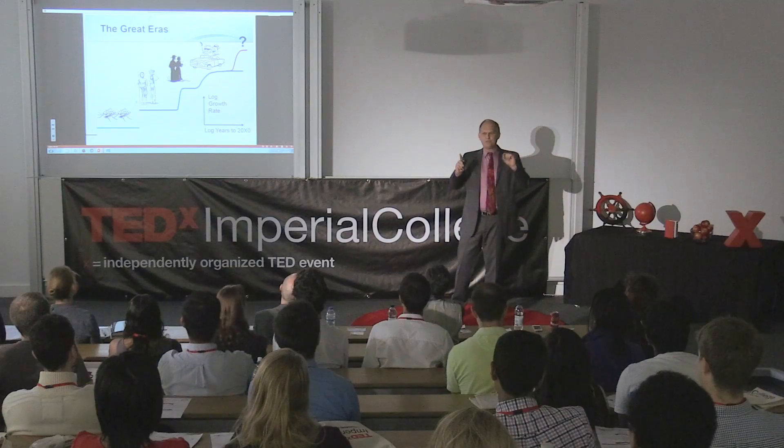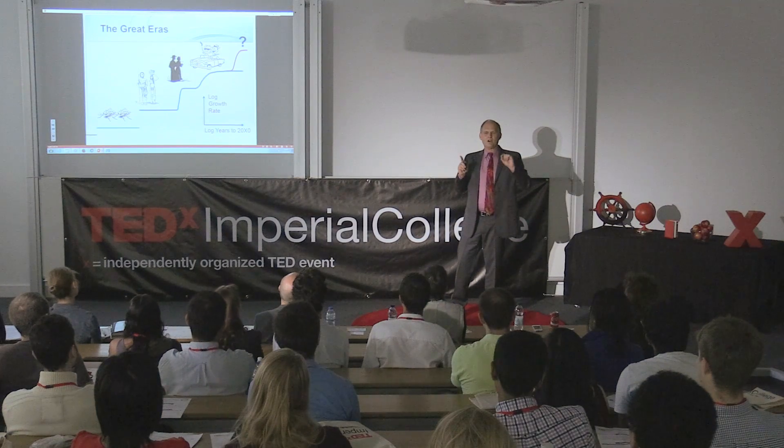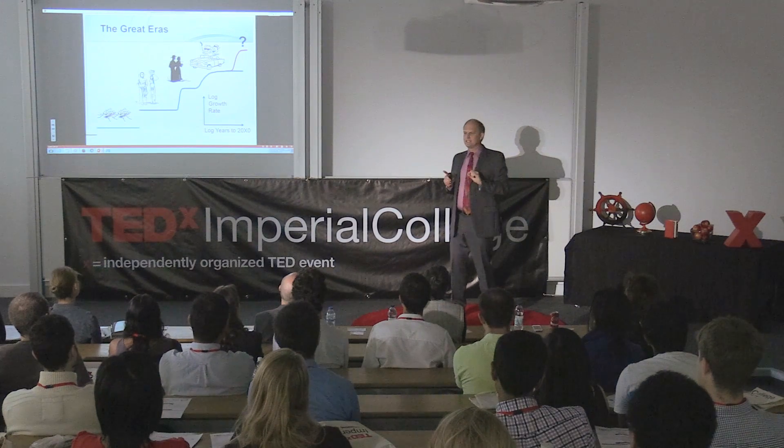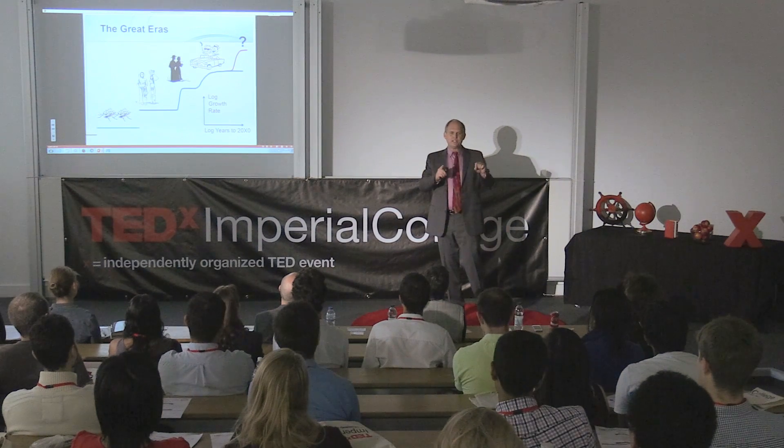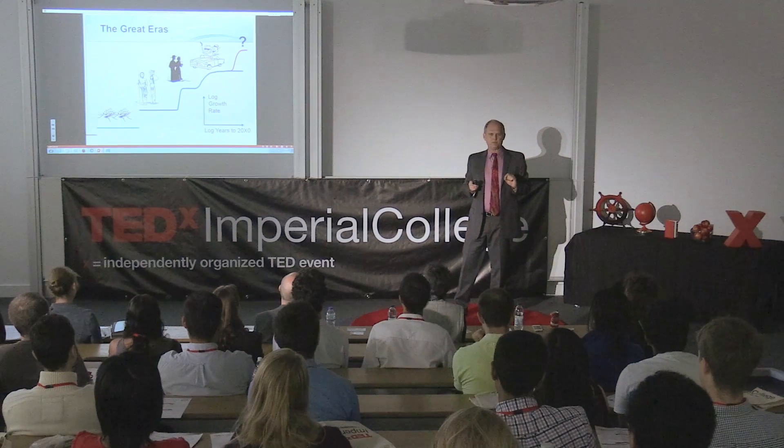What could possibly cause such an enormous change? One of the things people have talked about as a big potential change over the next century or so are smart robots, artificial intelligence — machines that can do most tasks as well as people. And there are many ways that might happen.